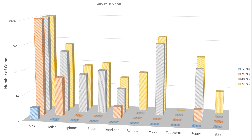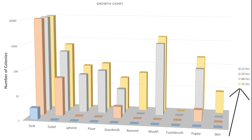Here are the final results. On the left axis we have the number of colonies — notice that this is a log scale, so each tick mark goes from 10 to 100 to 1000 colonies. That means a bar twice as high has 10 times as many colonies. The different colors represent different time periods: blue at 12 hours, red at 24 hours, gray at 48 hours, and yellow at 72 hours. In the end, the sink was completely saturated by 72 hours. The toilet had 600 colonies. The iPhone had 74, the floor had 97, the doorknob had 24, the remote had 42, my mouth had 1500, my toothbrush had only one, my son's puppy stuffed animal had 222, and my skin had only eight.